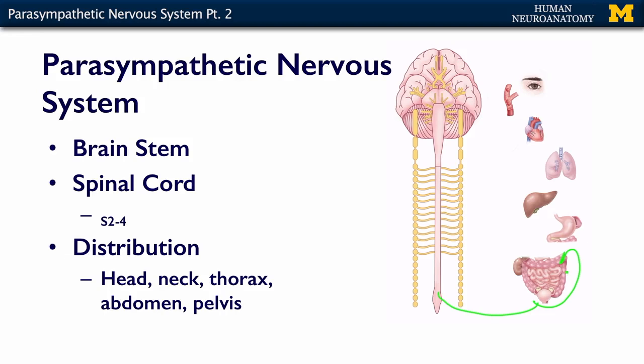The parasympathetics are distributed within your head, your neck, your thorax, your abdomen, and your pelvis. What's missing from this list are your limbs — there is no resting or digesting in your arms and legs, so they don't have a parasympathetic component to their innervation.